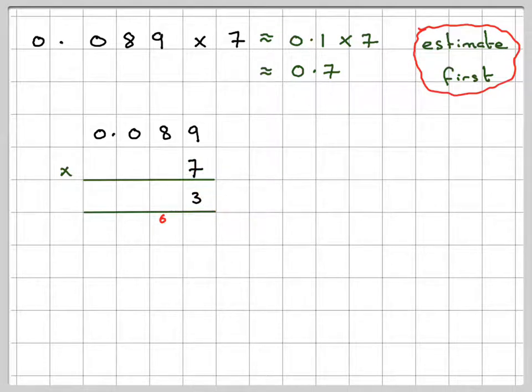7 times 8, which is 56 plus the 6. 6 plus the 6 makes 62. So it's 2, carry the 6. And then we've got 0 times 7, which is nothing. But we've got a 6 here, so we need to put that in.